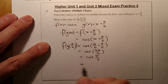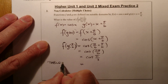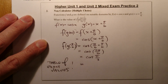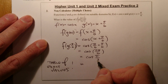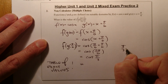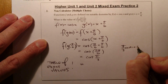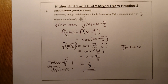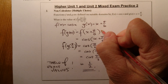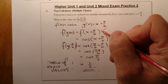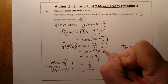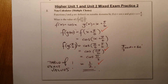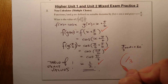This is a non-calculator question so I go to my table of exact values. π/3 radians equals 60 degrees, so cos(π/3) = 1/2. Marks: one for getting f with the correct bracket, one for cos(2π/6), and one final mark for getting 1/2 - that's 3 marks.